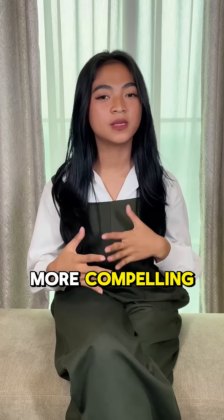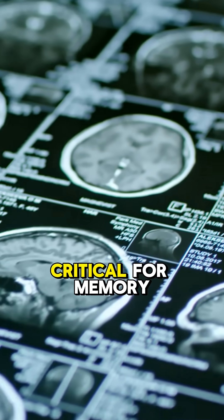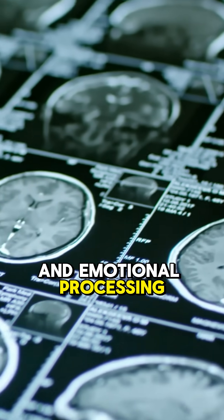But what's even more compelling is that fMRI scans showed changes in the uncinate fasciculus, a brain tract critical for memory and emotional processing.